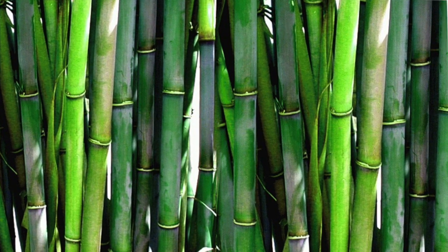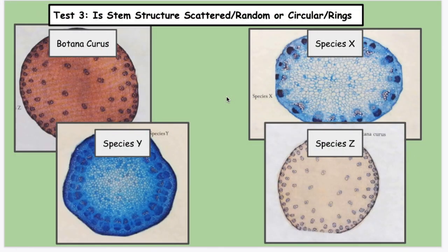The next physical test is examining the cross-section of stems, looking at these microscopic structures called vascular tissue. Botanicurus is considered random - it's scattered around. Species X is actually organized in these big bundles going around, forming a ring. So you've got to consider whether it's scattered or circular. BC is scattered. Species X is circular. This is another circular, and that looks pretty scattered. You've got to tell yourself which one looks closest to Botanicurus.